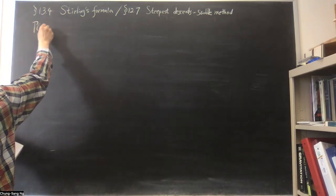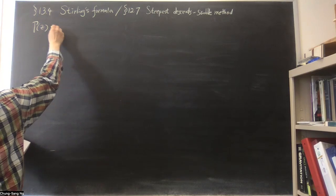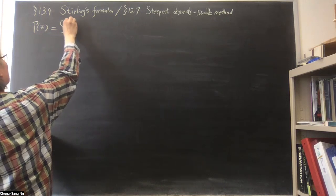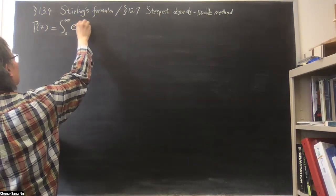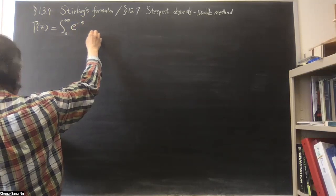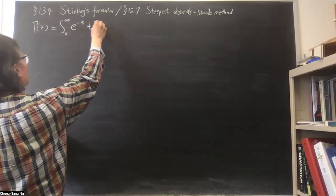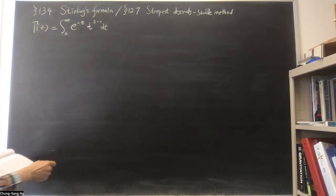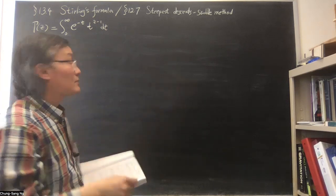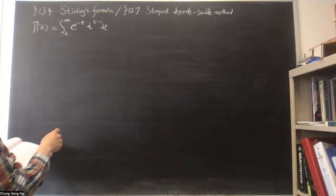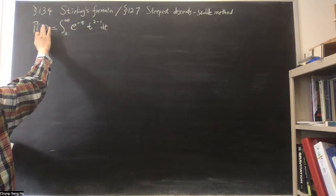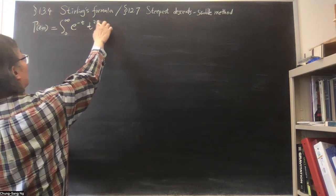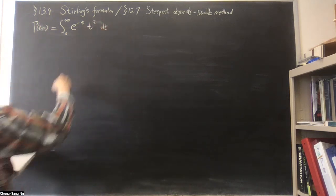So gamma(z) is the integral from 0 to infinity of e^(−t) · t^(z−1) dt. And in fact we'll shift the argument: instead of z, we'll use z+1, so we have t^z in the integrand.